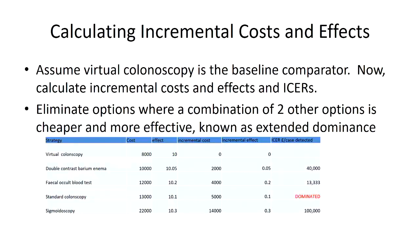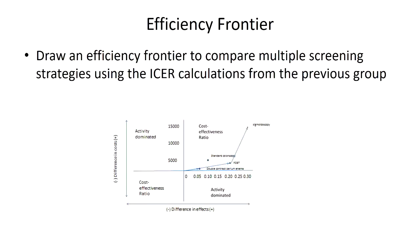The final group calculates the ICERs and identifies dominated strategies — those don't need to be compared to the others. They also draw an efficiency frontier to compare multiple screening strategies, which is just an alternative way of illustrating cost-effectiveness. The group fills in these lines and can then compare the efficiency frontier to the cost-effectiveness plane as two different ways of illustrating the same information.